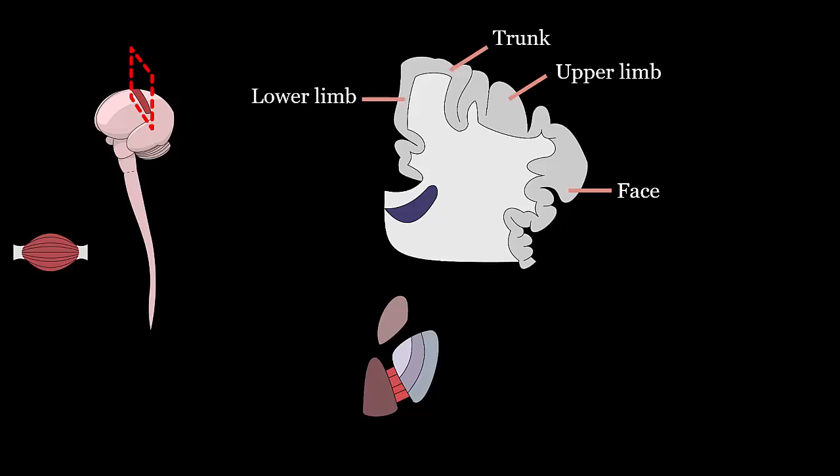So if we were to have a stroke, which results in neuronal death if not promptly identified and treated, in this part of the brain that controls the lower limb, we will have right-sided lower extremity weakness.